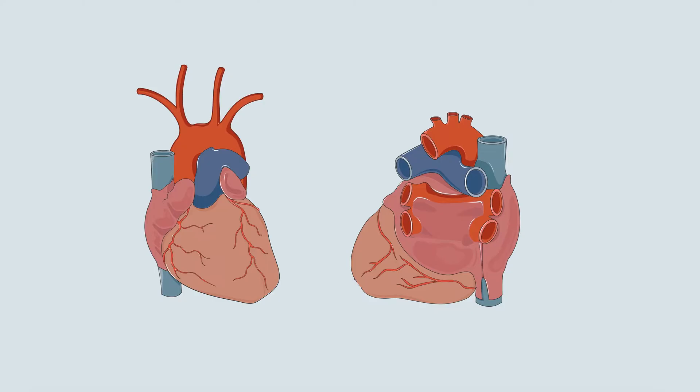Let's start with the general anatomy and the views. If we look externally, note that these regions roughly represent the right atrium, this the right ventricle, this the left atrium, and this the left ventricle.